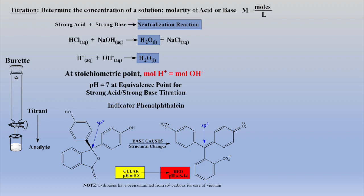Phenolphthalein is clear in acid and a bright magenta red in base. The color change is due to structural changes as base reacts with phenolphthalein. As soon as excess base is present, the central carbon atom changes hybridization from sp3 to sp2, allowing for a different extended pi system, which is responsible for the observed color change.